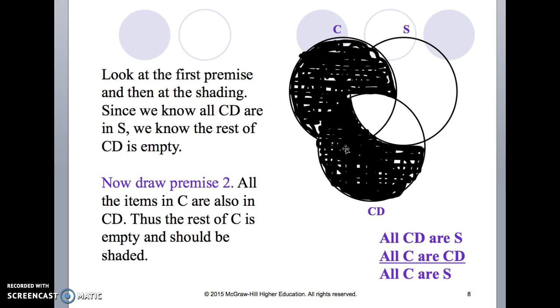Once we do that we then look to see if the conclusion, which is all C's are S's, is that what is explicit? Is that what is proved? Assuming all CDs are S, we've already shaded that, and all C's are CD, does it logically follow, are all the C's in the S circle?